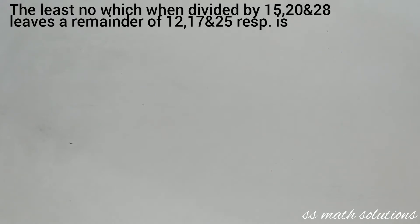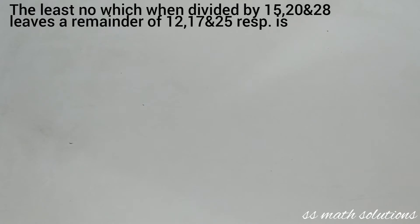Next question: the least number which when divided by 15, 20, and 28 leaves remainders of 12, 17, and 25 respectively. Options are 837, 624, 484, and 417. One number divided by 15, 20, and 28 gives remainders 12, 17, and 25.